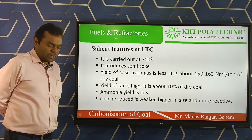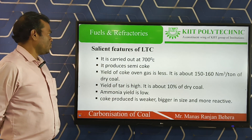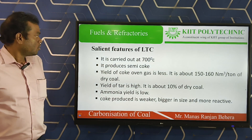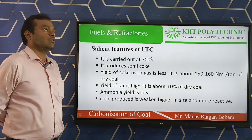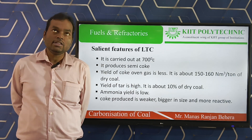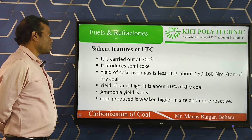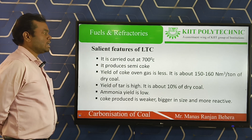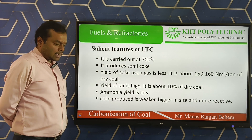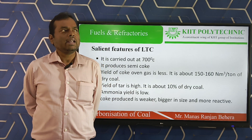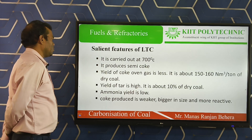Salient features of LTC. Low temperature carbonization is carried out at around 700 degrees centigrade and it produces semi-coke. The yield of coke oven gas is very less — about 150 to 160 normal cubic meters per ton of dry coal. The yield of tar is high — about 10% of the dry coal used. The ammonia yield is low compared to high temperature carbonization.